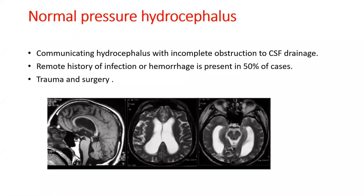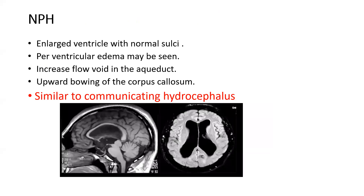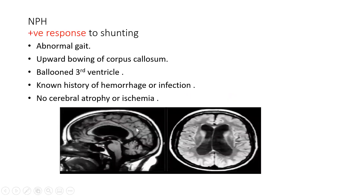Normal pressure hydrocephalus is a communicating hydrocephalus with incomplete obstruction to CSF drainage. The patient has a remote history of infection or hemorrhage in 50% of cases, or trauma and surgery. Presenting features are the triad of gait ataxia, dementia, and urinary incontinence. Imaging shows large ventricles with normal sulci, distinguishing it from other causes of hydrocephalus where there are obliterated sulci. Periventricular edema is more common in other forms of hydrocephalus. Increased flow void in the aqueduct and upward bowing of the corpus callosum are features. Positive response to shunting is predicted by abnormal gait, upward bowing of corpus callosum, ballooned third ventricle, no history of hemorrhage or infection, and absence of cerebral atrophy or ischemia.